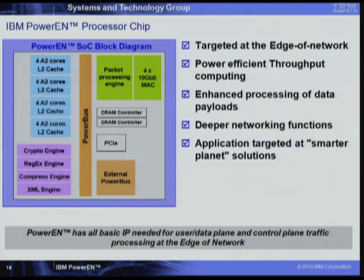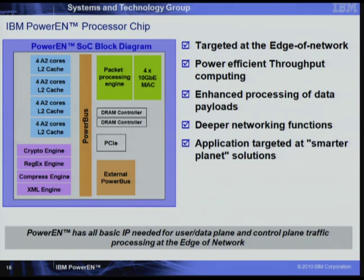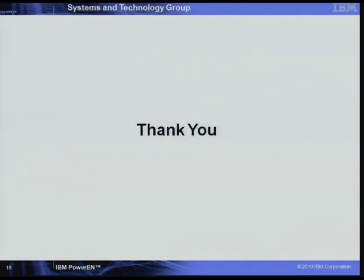The function integrated on this chip—the specific features as well as the advanced technology for virtualization, multiprocessing, and ease of programming—make this a part well targeted for emerging applications at the edge of network. We have significant throughput computing that is very power efficient, supports advanced data processing on payloads for deeper networking functions, and is a good platform for appliances and IBM Smarter Planet applications. Thank you.